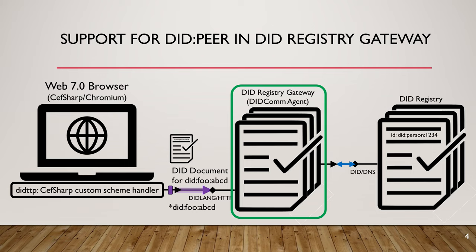The way DID PEER is supported is you still make an inquiry as if you were expecting a DID document from the DID registry. But it's going to be one that's essentially calculated within the registry gateway from the DID PEER DID, and it'll be returned as a DID document. So we'll have transparent or symmetric access to all DID methods via the DID registry gateway.